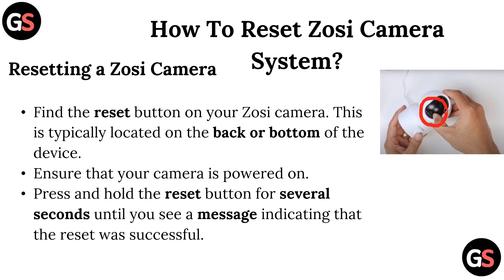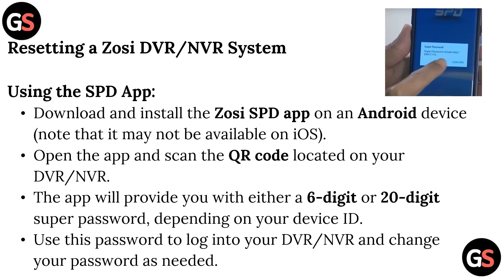Ensure that your camera is powered on, then press and hold the reset button for several seconds until you see a message indicating that the reset was successful. Alternatively, you can try resetting a Zawzi DVR or NVR system using the SPD app.